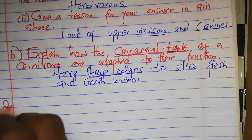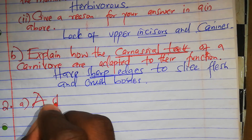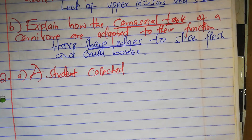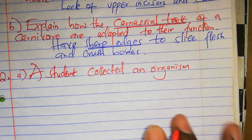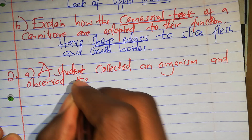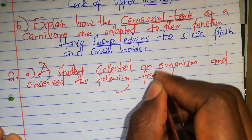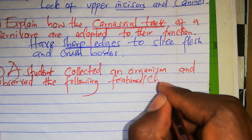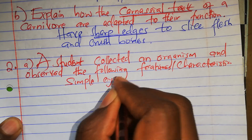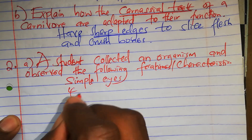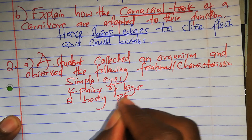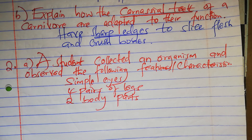Question two. We are done with question one. A student collected an organism and observed the following features: simple eyes, four pairs of walking legs, and two body parts. These are the three features the student observed.